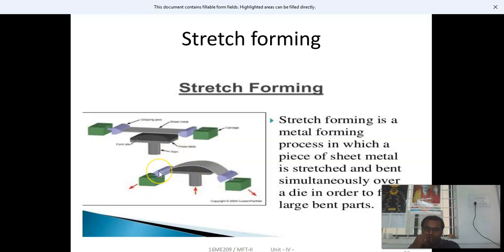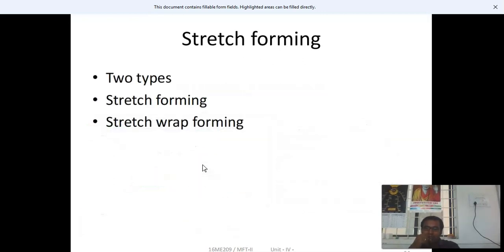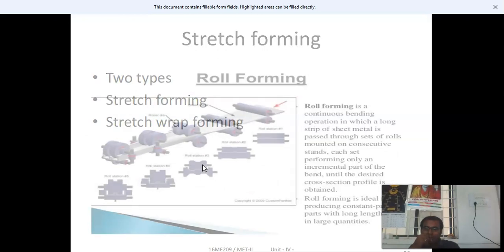Both tensile and compressive forces are involved in this process. The tensile force stretches both ends of the sheet metal in opposite directions, while the compressive force occurs when the die compresses and bends the sheet metal according to the desired shape. There are two types of stretch forming: stretch forming and stretch wrap forming.